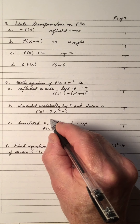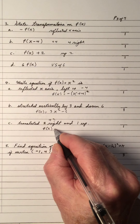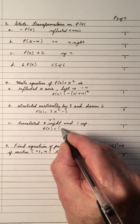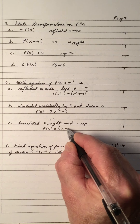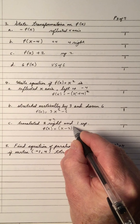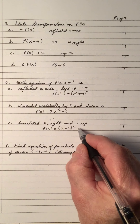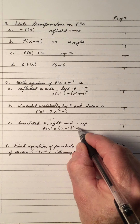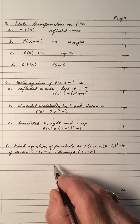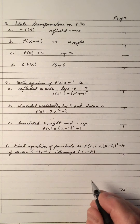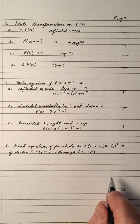A shift 2 right is a plus 2 horizontally, so the equation has x minus 2 inside. Up 1 is a plus 1 added outside. So the equation is f(x) equals (x minus 2) squared plus 1. Give yourself a mark if you got that equation right.